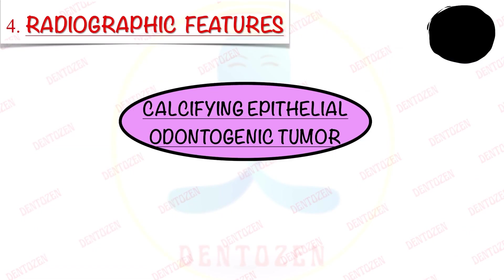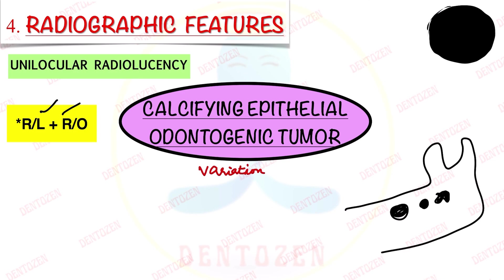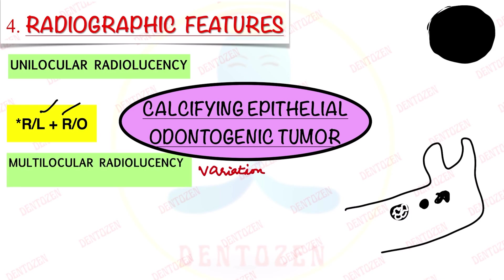Regarding radiographic features, there is considerable radiographic variation — we can see different pictures on radiograph. Either it can present as a unilocular radiolucency with well-defined or diffuse borders, or it can present as a mixed radiolucent-radiopaque appearance. Within the radiolucency, irregular trabeculae can divide it into compartments giving a multilocular appearance, termed a honeycomb pattern. The margins of this radiolucency are often scalloped.